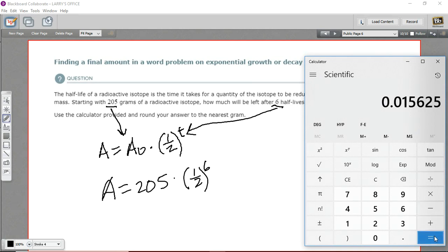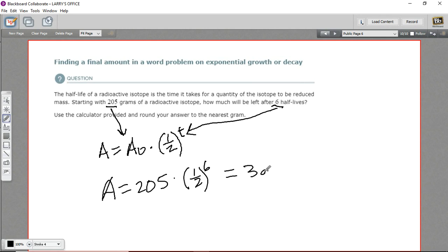Okay, so that's one-half to the sixth power. Now I just need to multiply that by 205. So times 205. And we have 3.203125 grams left. They want the answer to the nearest gram. So this is three grams.